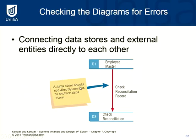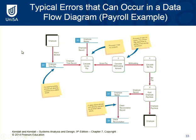You can't connect data stores directly to another data store — there must be some processing that occurs in between. You also can't connect data stores and external entities directly to each other. A specific payroll example: process one 'calculate gross pay' has no output because the gross pay arrow is going in the wrong direction. An external entity — employee — cannot provide data straight into the employee data file; the employee needs to interact with a process, which then stores the information. Process two 'calculate withholding amount' has no input because the gross pay data flow is going the wrong direction.